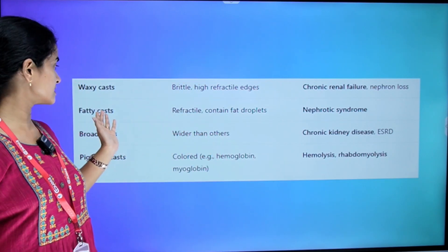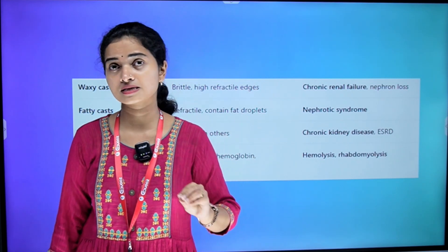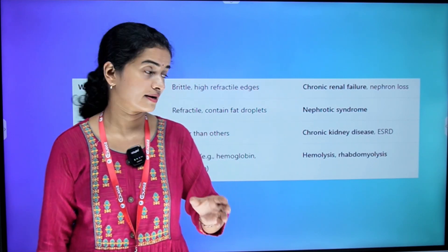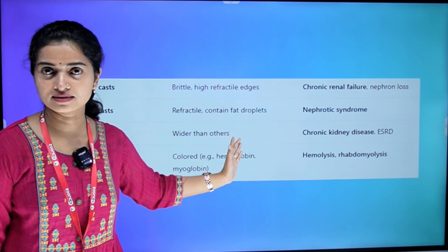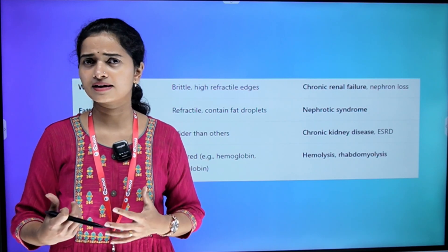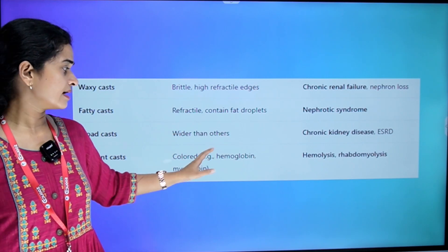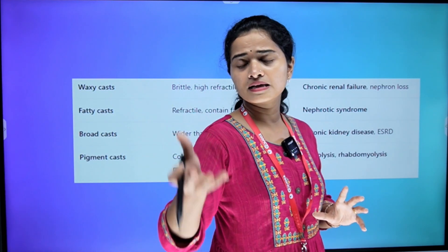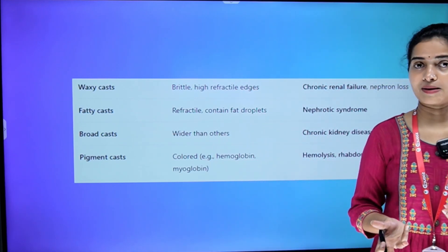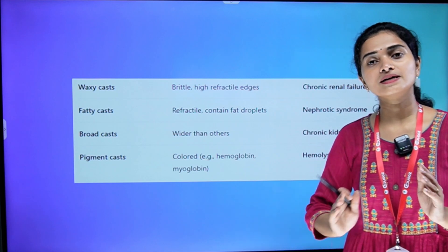Fatty cast — they are refractile and contain fat droplets. The clinical significance is nephrotic syndrome. Broad cast — broader than others, seen in chronic kidney disease and ESRD. Pigment cast — like hemoglobin, myoglobin; seen in rhabdomyolysis and hemolysis.